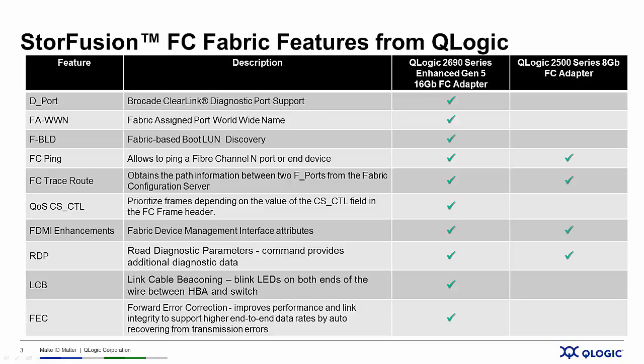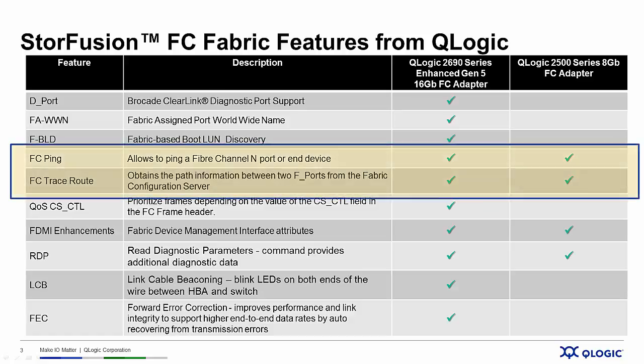We're going to focus this session on FC-Ping and FC-TraceRoute. Note that while these two features are part of the overall StoreFusion feature set for enhanced Gen 5 fiber channel, they also happen to be supported with Q-Logic 8-gig fiber channel adapters when connected to Brocade Gen 5 fiber channel fabrics.